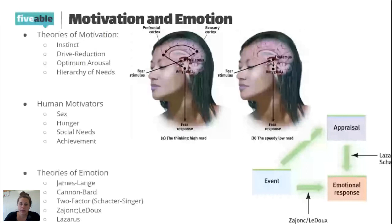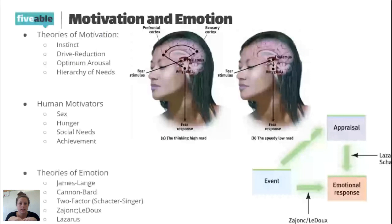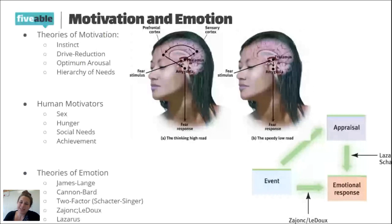Ventromedial and lateral hypothalamus — those are tricky. Lateral has to do with bringing on the feeling of hunger and starting to eat. L comes before V alphabetically, so you have to start eating before you can stop eating. The lateral hypothalamus makes you feel hungry; the ventromedial hypothalamus brings on the feeling of fullness and satiety — 'I'm done eating.' L comes before V, so you start eating before you can stop.